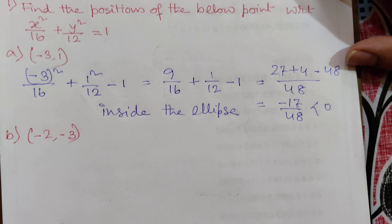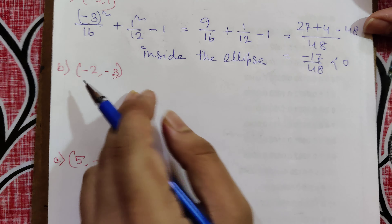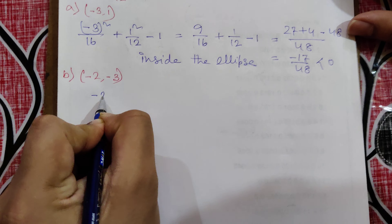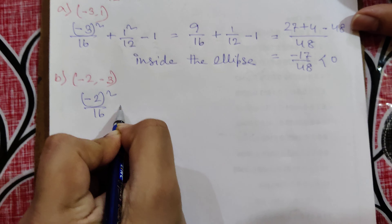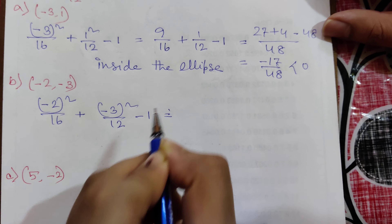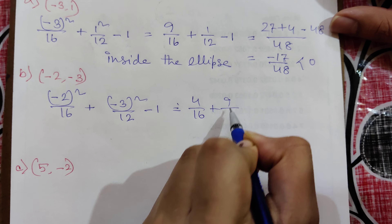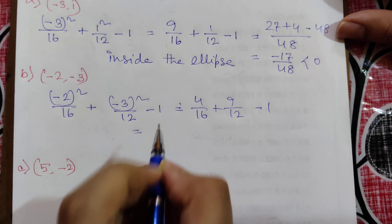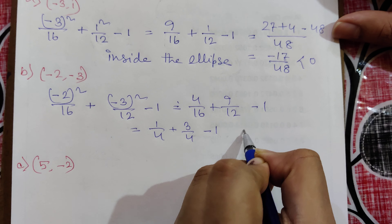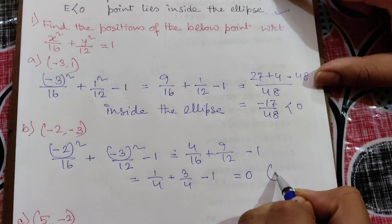Moving on to the next point, x = -2 and y = -3. Substituting: (-2) squared by 16 plus (-3) squared by 12 minus 1, which equals 4 by 16 plus 9 by 12 minus 1, simplifying to 1 by 4 plus 3 by 4 minus 1, which equals 0. Since E = 0, the point lies on the ellipse.